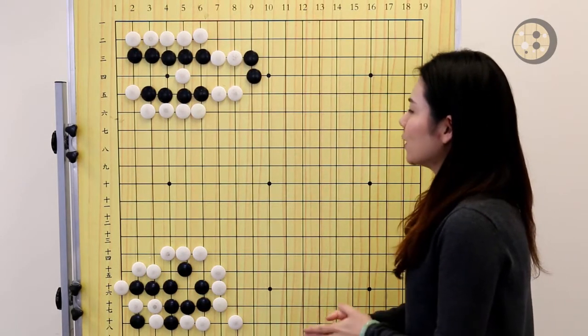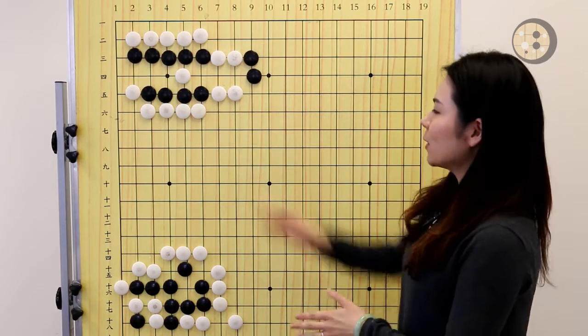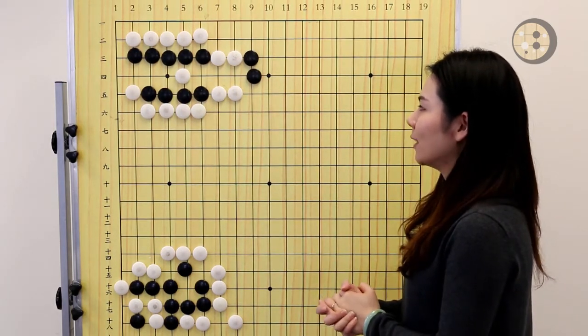Okay, so let's look at the questions on the board. In this question, Black to play and how should Black make it live?